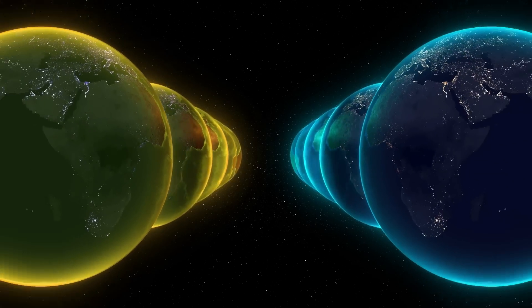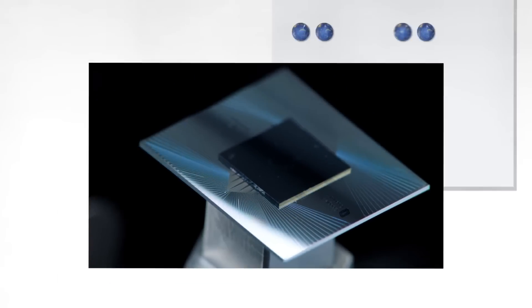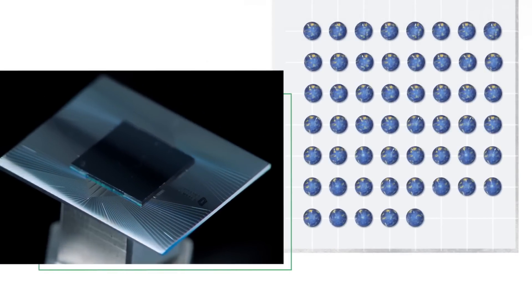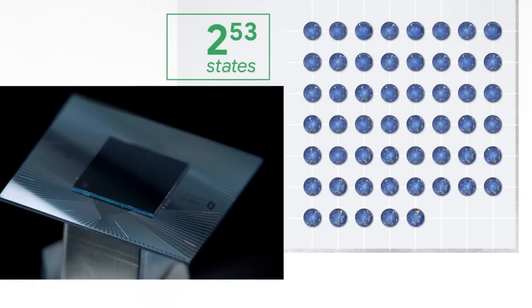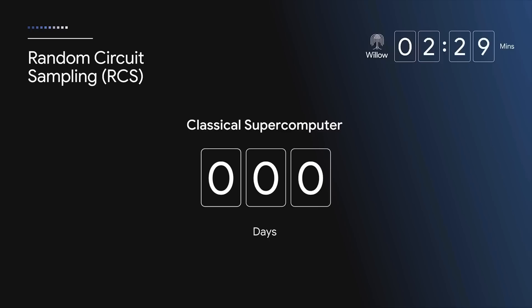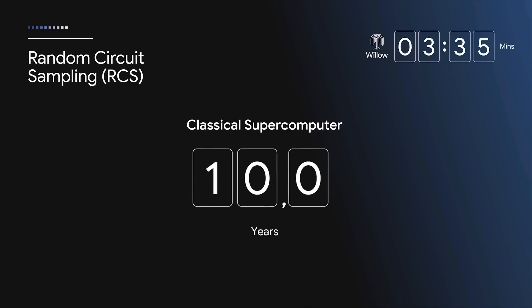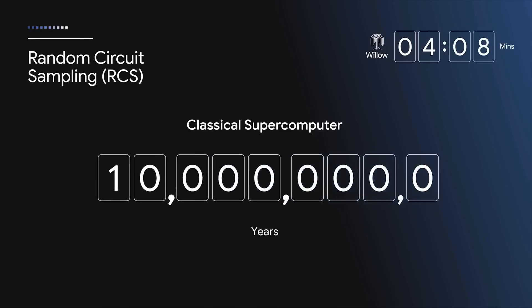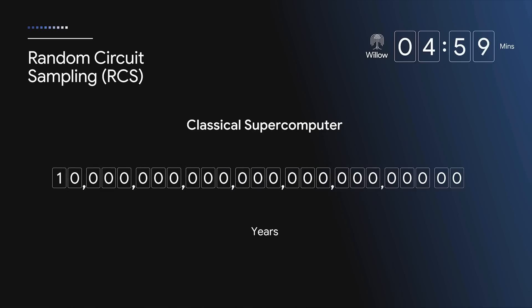Now, imagine taking this further. What if quantum computers didn't just process calculations in parallel, but explored multiple possible outcomes simultaneously, rapidly identifying the optimal solution? That's the real breakthrough. With quantum error correction and a system like Willow, these calculations could be faster, more reliable, and more precise than ever before.